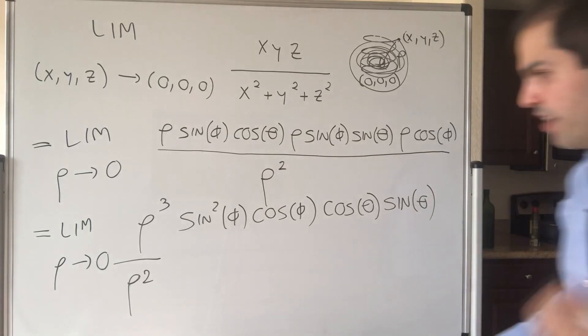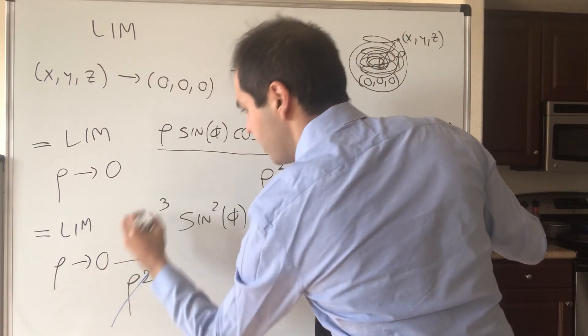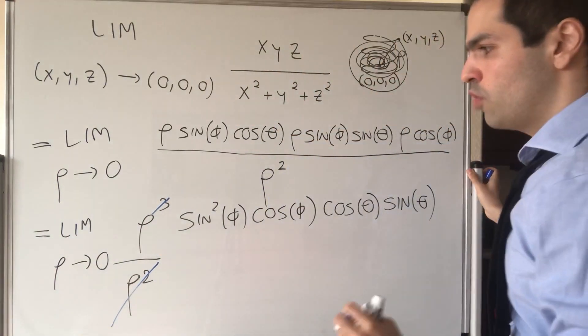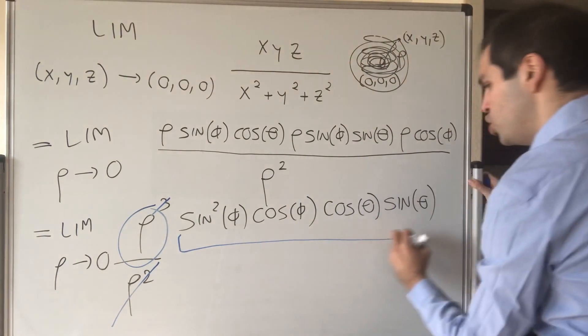So then what do we get? Actually something pretty straightforward. So rho cubed divided by rho squared, that is rho. So basically what we get? We get rho times some junk.